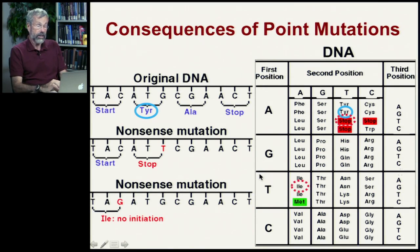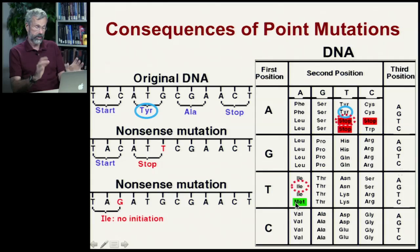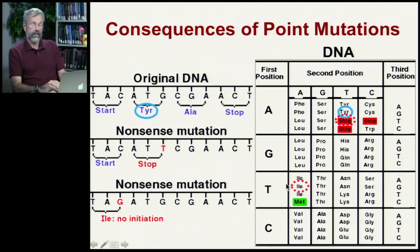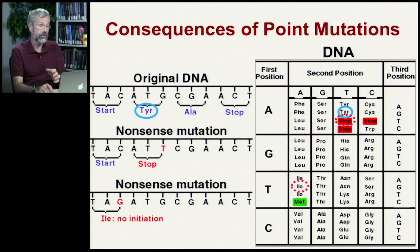Another form of nonsense mutation occurs where instead of having TAC, which is the start site, and can deliver a different amino acid depending on where it is in the sequence — if it becomes TAG, it doesn't know to start. It'll try to deliver an amino acid but nothing happens, because it hasn't been told to assemble all the bits and pieces of transfer RNA. So you wouldn't get that protein being synthesized at all.